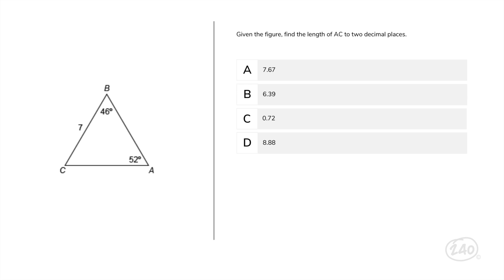Nice work! We're a third of the way through. Keep it up! Given the figure, find the length of AC to two decimal places. Let x represent the side AC using the law of sines. Now let's cross-multiply the results in the equation to come to 7 sin 46 equals x sin 52. So x equals 7 sin 46 over sin 52 equals 6.39. That means the answer is B.